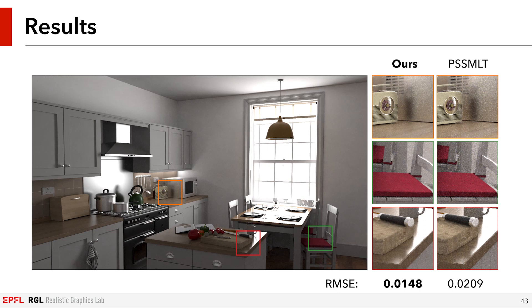Using this coherent algorithm, we can get improved convergence compared to standard non-vectorized PSSMLT. At equal time, the root mean square error is reduced by 30 to 40%. Here is another example of a scene with many complex glossy interactions, where we achieve a similar reduction in error. You can find a lot more detailed statistics related to errors and performance in our paper.